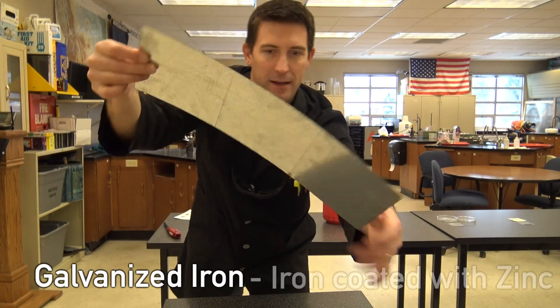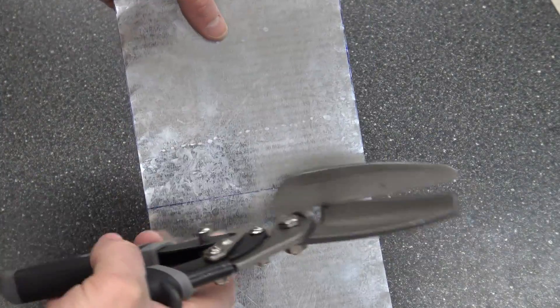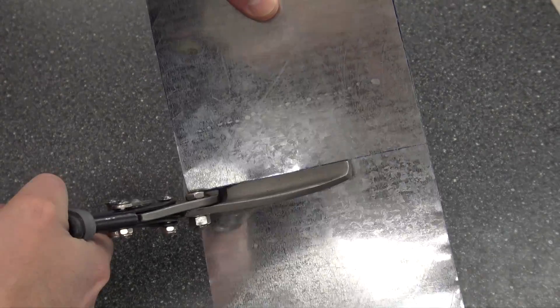We're gonna start off with some galvanized iron. That's just iron that's coated with zinc. Now it's got the zinc on the outside so that it doesn't rust if you use this outside.